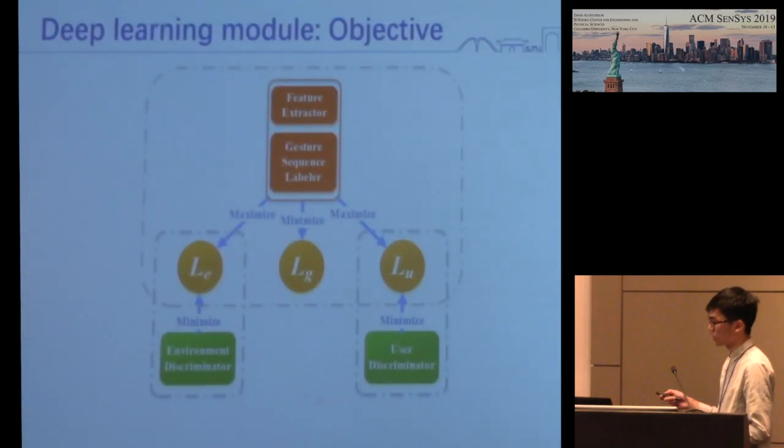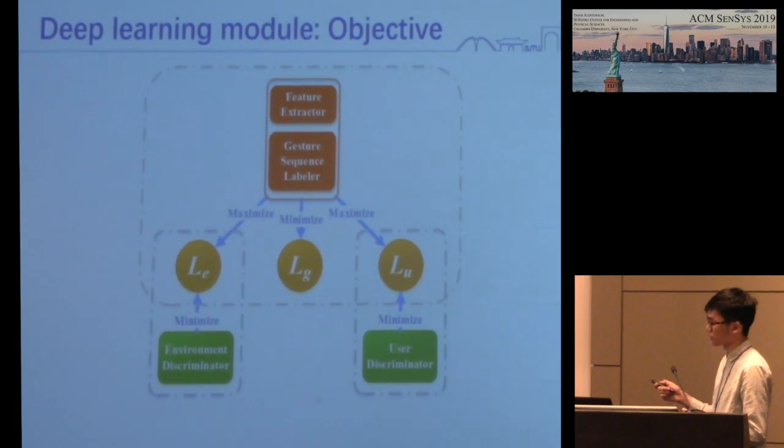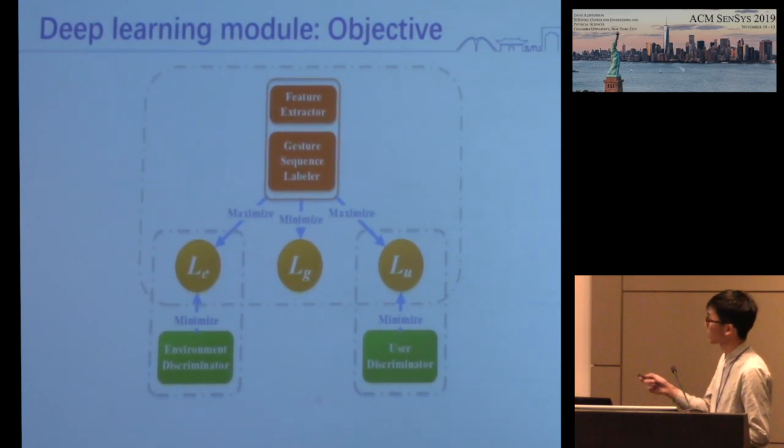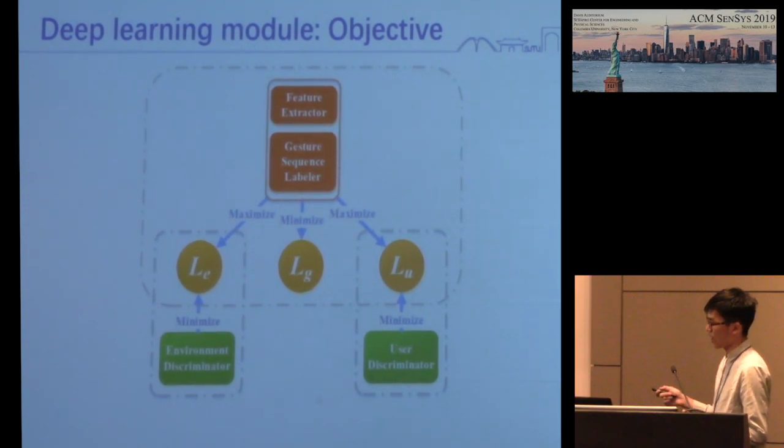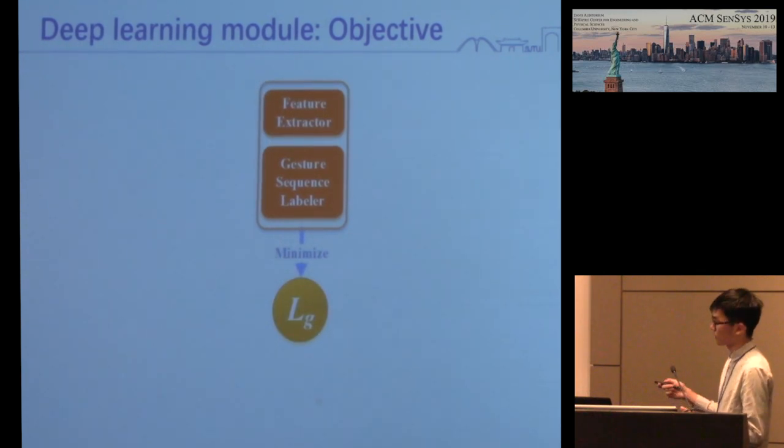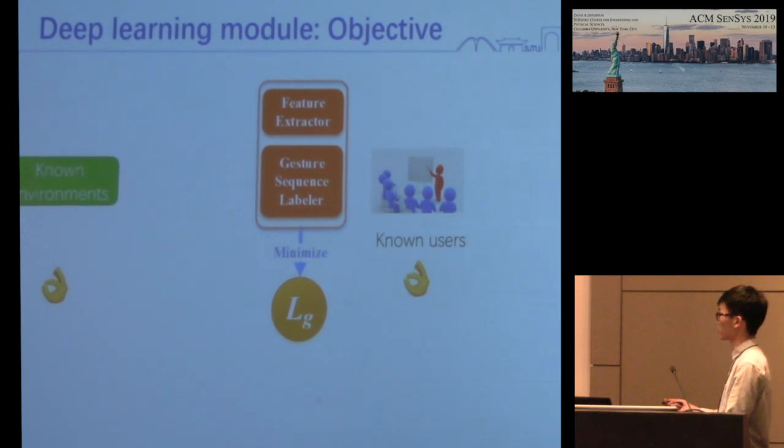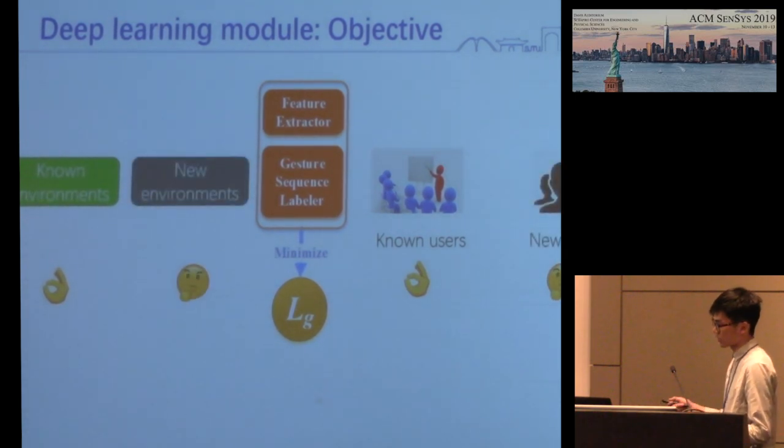Before describing the objective, we define several variables. LG stands for the cross-entropy loss between the ground truth and predictions. LE and LU represent the loss of environment and user discriminators. In traditional methods, we directly optimize parameters in the feature extractor to minimize LG. During training, the system learns gestures in the training set with some specific users in controlled environments, but may overfit to these users or constrained environments due to user variation and environment dependency.